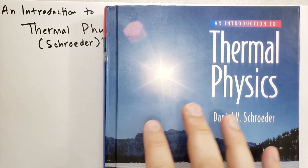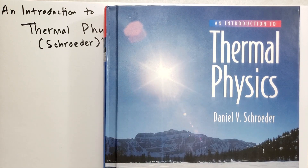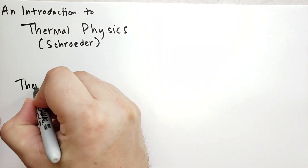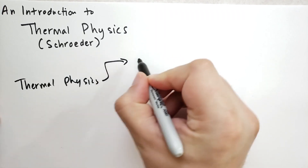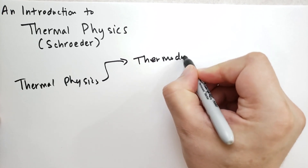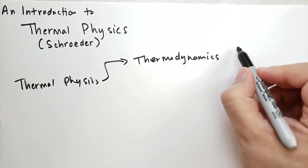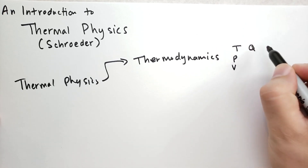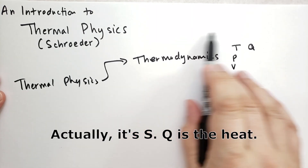The way this book is organized, it allows you to go through the textbook to study either statistical mechanics or thermodynamics. Thermal physics breaks into two branches. It can break into thermodynamics, which is the study of temperature, pressure, volume, and entropy. Thermodynamics studies these big quantities.